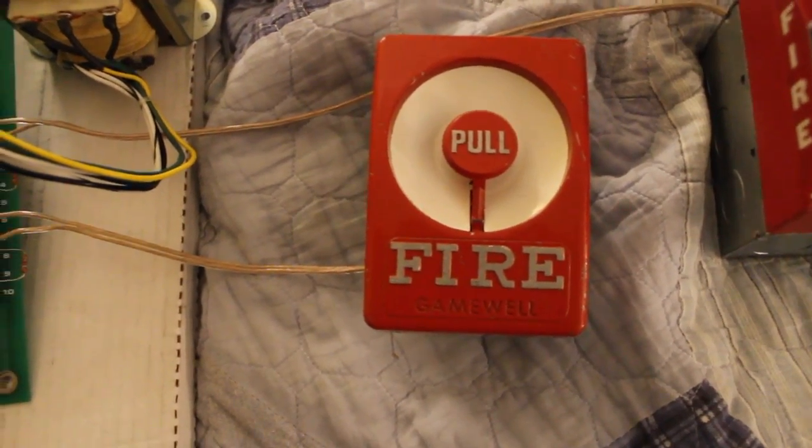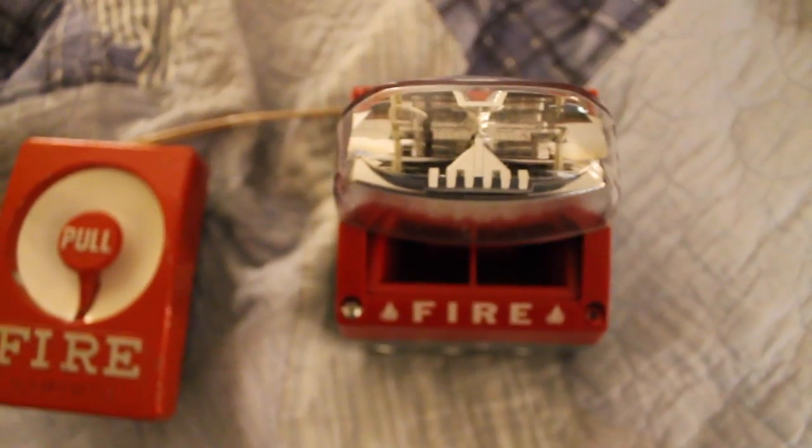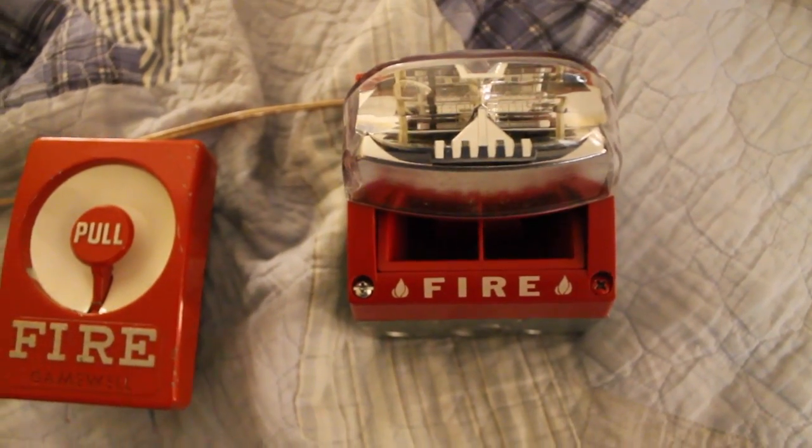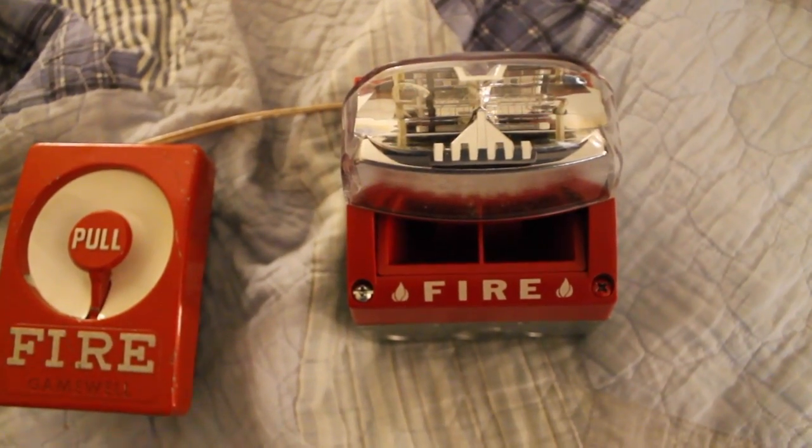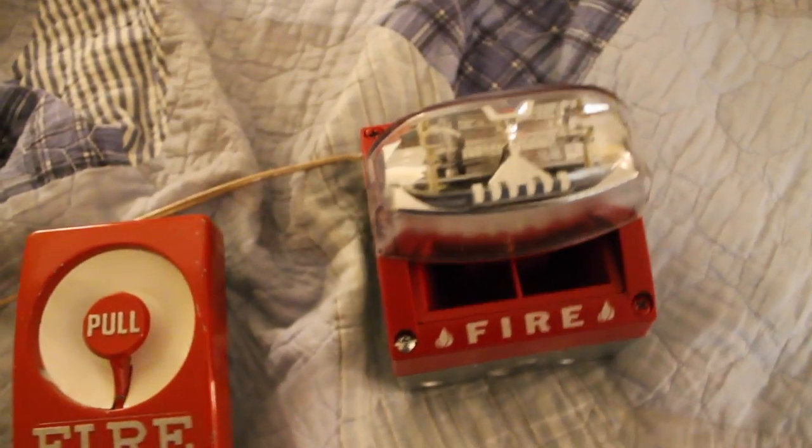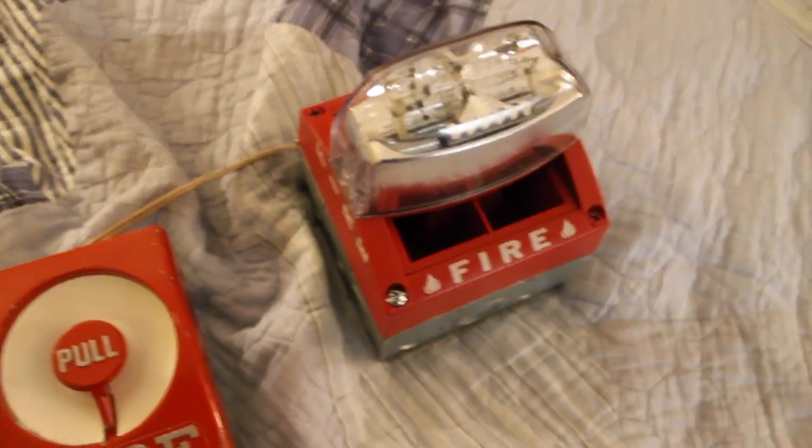You're catching a glimpse of it, but I have a System Sensor MAS for the audible device. This is the MAS241580A. It's a 15 candela strobe that's meant to be powered on 24 volts DC. And for today's demo, I have this set to slow whoop.